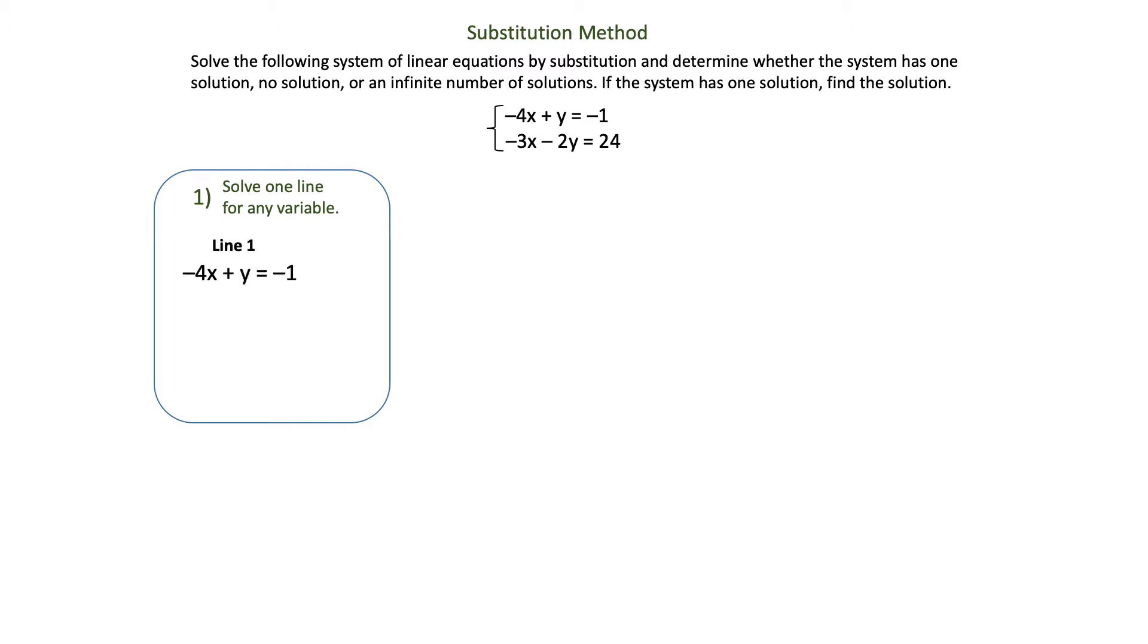I'm going to write both lines down and determine whether one of them already has a variable that's by itself with a coefficient of 1. In line 1, y is already by itself so that's going to be the easiest variable to solve for.